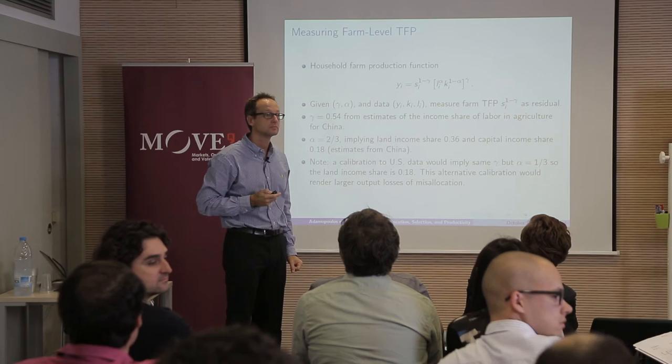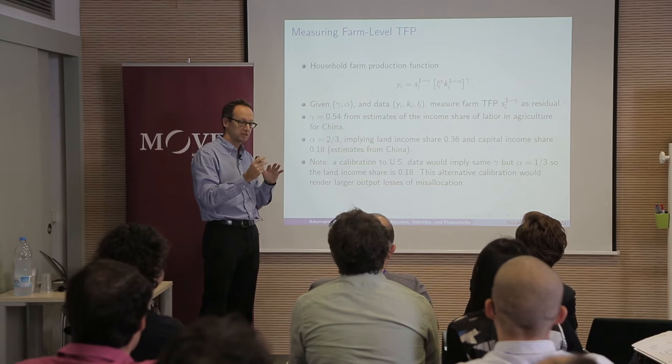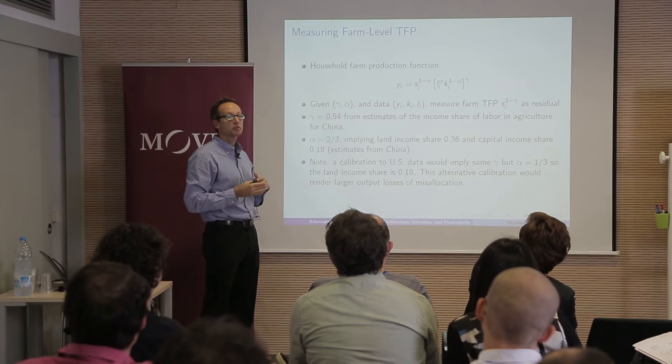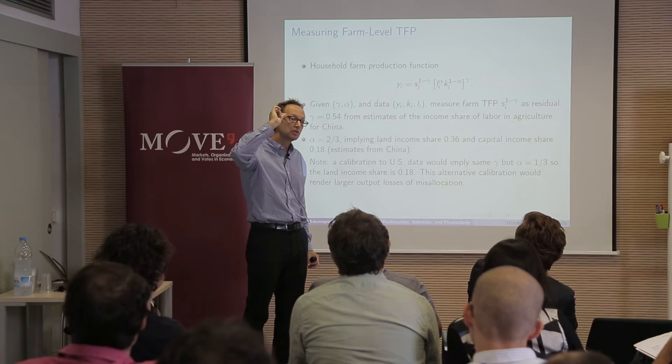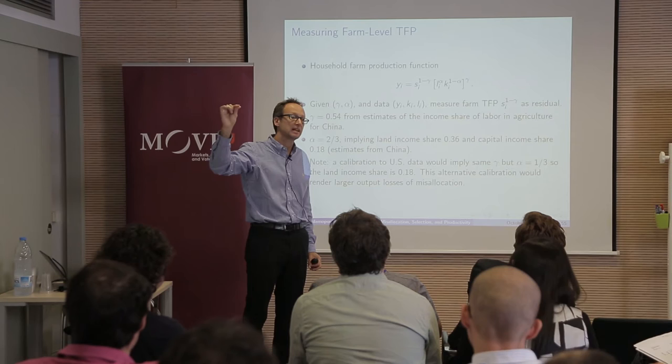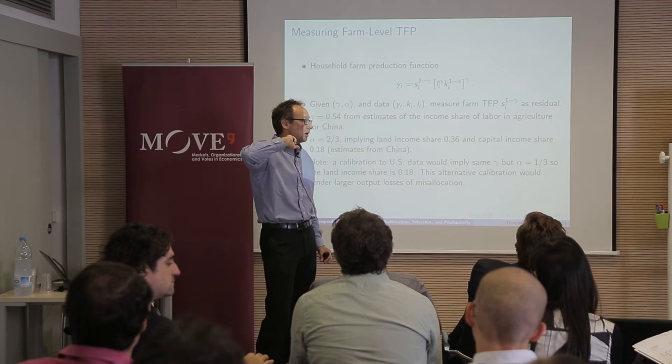Here I'm emphasizing misallocation within agriculture — I'll talk later about labor moving to non-agriculture. This land institution affects the allocation of land in particular. Because you cannot use this land to get credit, this distortion really acts as an output tax on the agricultural sector. We think of this as being special within agriculture because it's an institution relating to land, which is important in agriculture. Other frictions like credit market frictions affecting the entire economy are subsumed into some economy-wide TFP.